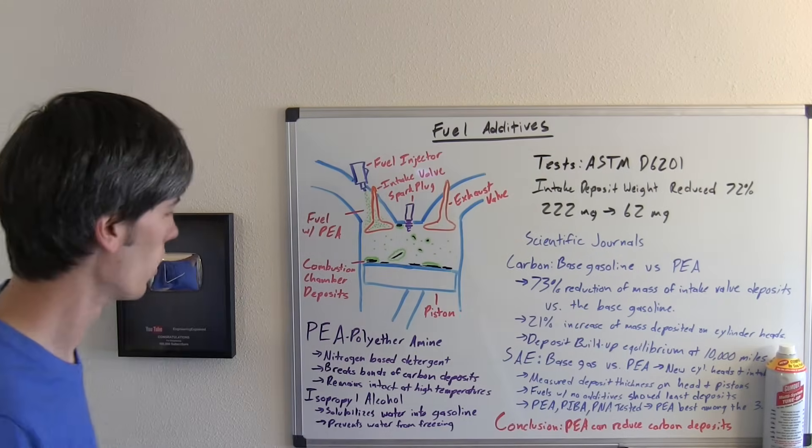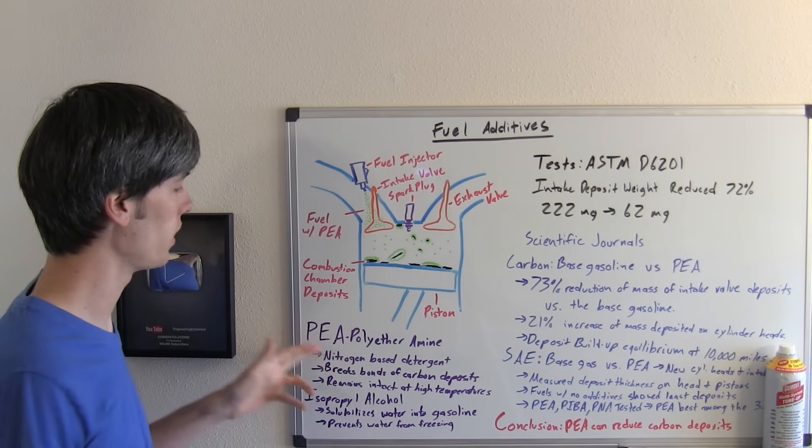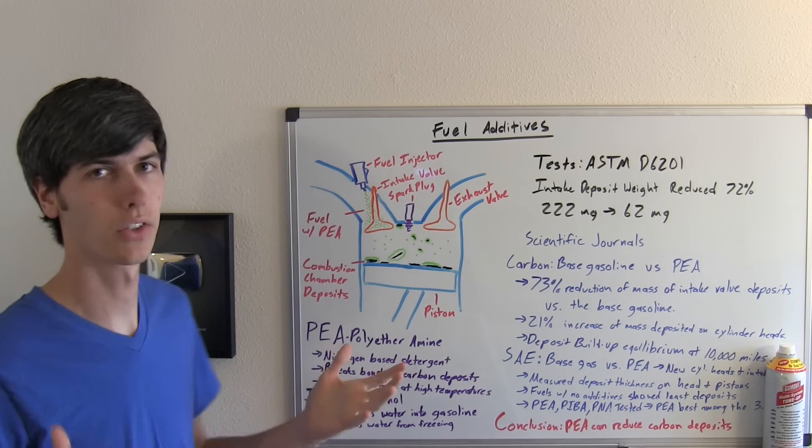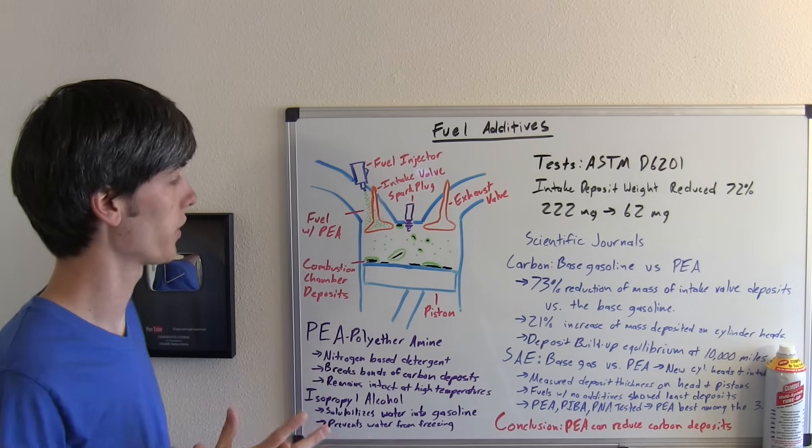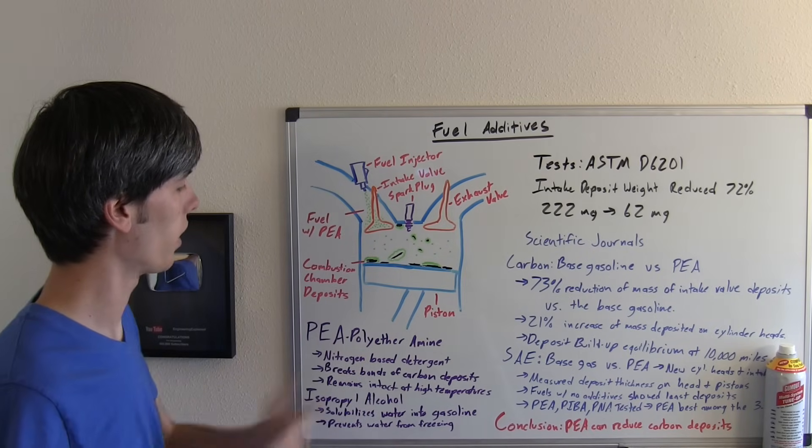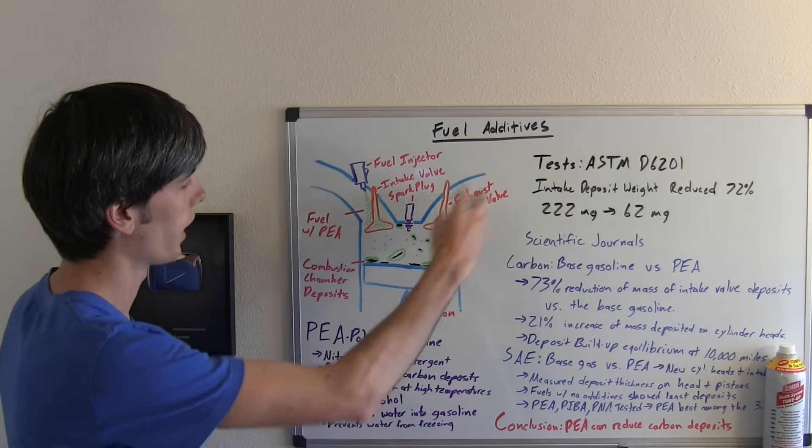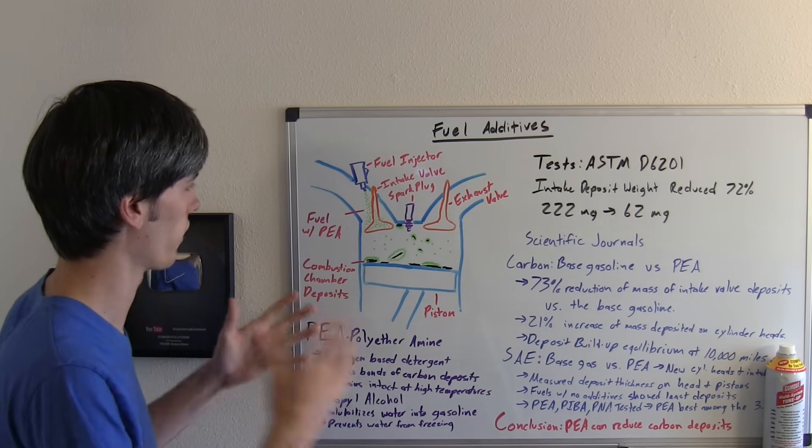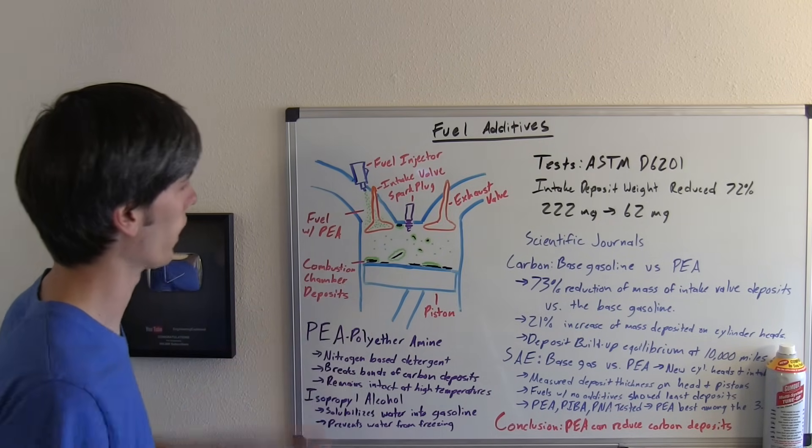So how does Gumout work? Well one of the main cleansing agents is PEA or polyetheramine. This is a nitrogen-based detergent and it's used to break the deposits off of whatever they've bonded to. It breaks the bonds down of carbon deposits and then those particles will pass out through your exhaust once they've solubilized with the gasoline.